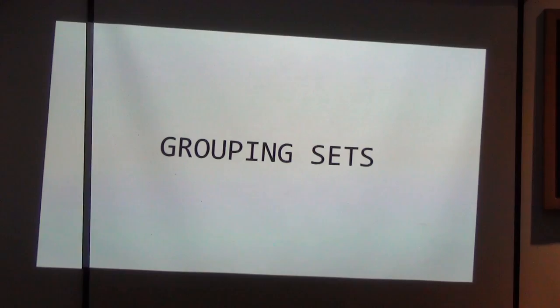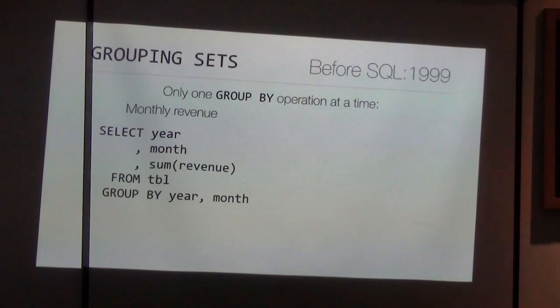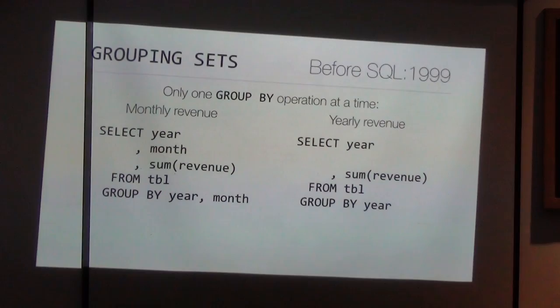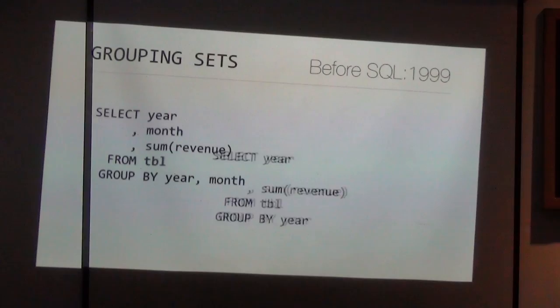Grouping sets — another great feature introduced in SQL 99. You know GROUP BY, and the limitation of GROUP BY is that you can only do one aggregation per run. Sometimes you might want revenue figures on a monthly basis and also on a yearly basis. You can have a left query and a right query — the only difference is the GROUP BY clause and SELECT clause. With SQL 92 you cannot run those in one run. Well, you can, because SQL 92 is composable — you can combine them with UNION ALL.